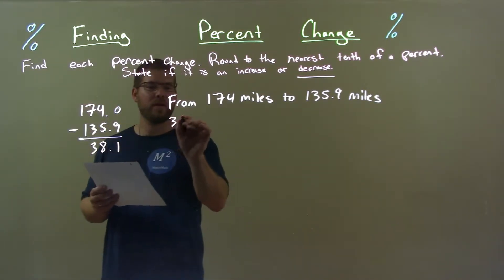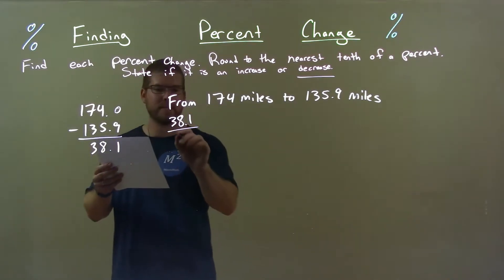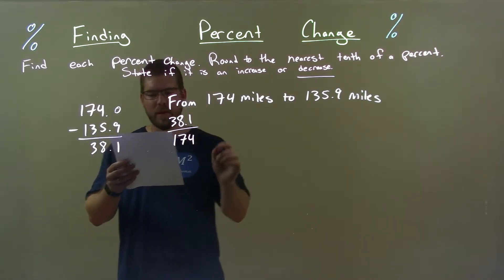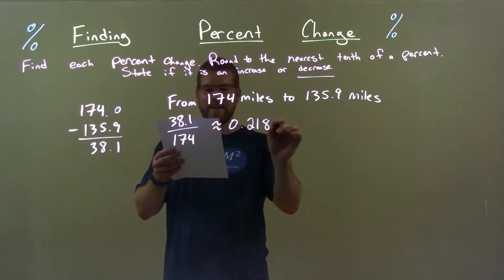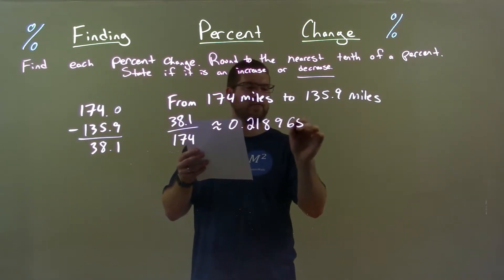Take that number 38.1 divided by the first number, which is 174. That's approximately 0.2189655.